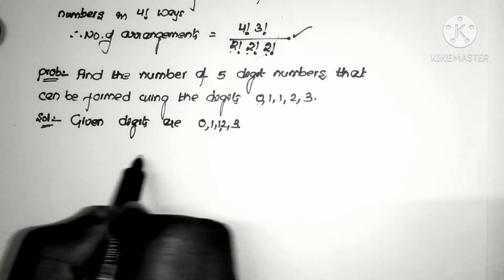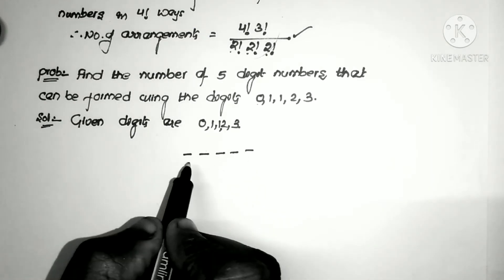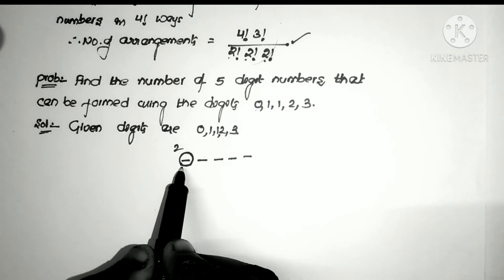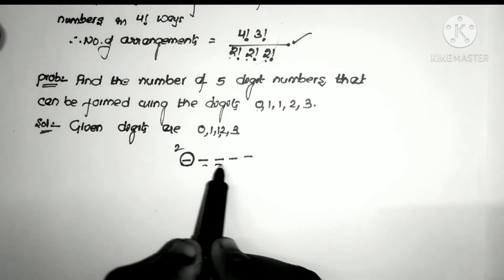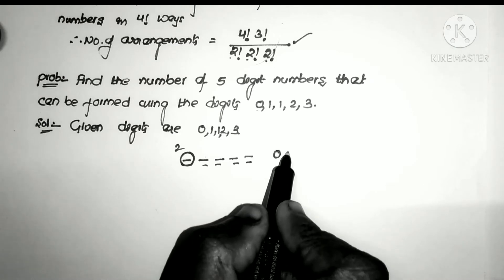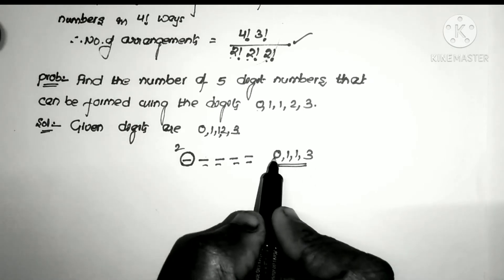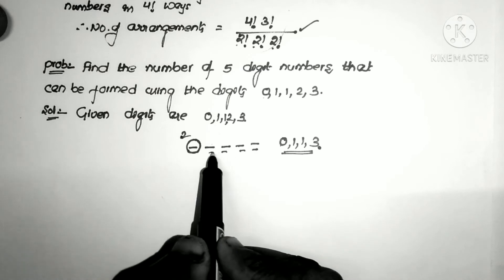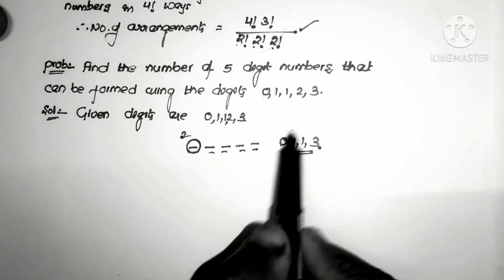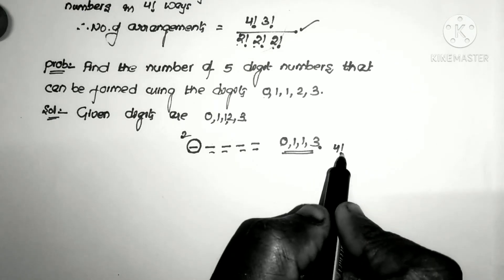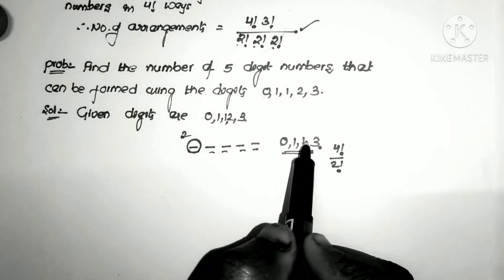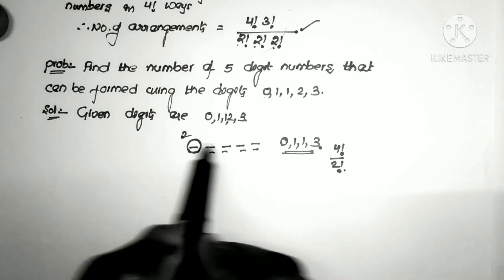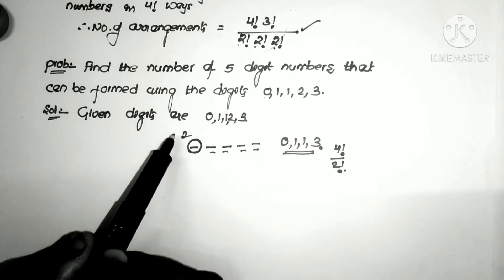To form a 5-digit number, the first gap cannot be 0. We consider numbers starting with 2: we fix 2 in the first place, and the remaining 4 gaps are filled by 0, 1, 1, 3. Since 1 is repeated twice, this can be done in 4!/2! ways. So the count of 5-digit numbers starting with 2 is 4!/2!.